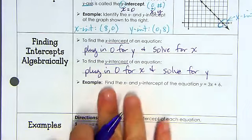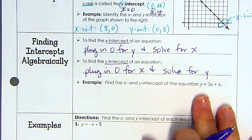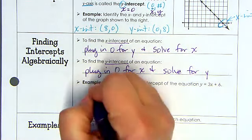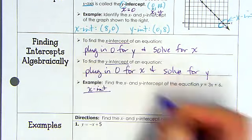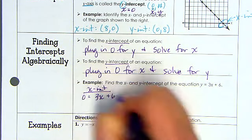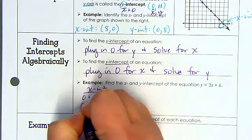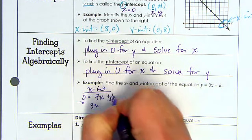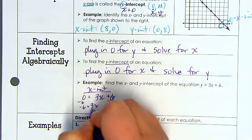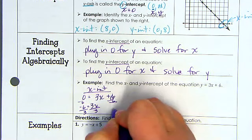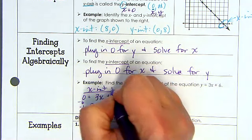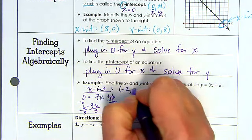All right, so let's go ahead and do that for this example. Find the x and y intercept of the equation y equals 3x plus 6. So I'm going to plug in for the x-intercept. I'm going to have 0 equals 3x plus 6. And now I solve. So I subtract 6, subtract 6, and I have 3x. Negative 6 equals 3x. Divide by 3. And we have negative 2 equals x. So therefore, the x-intercept is going to be negative 2 comma 0.